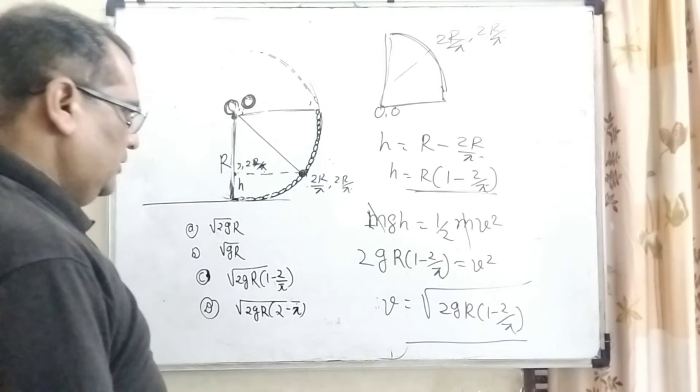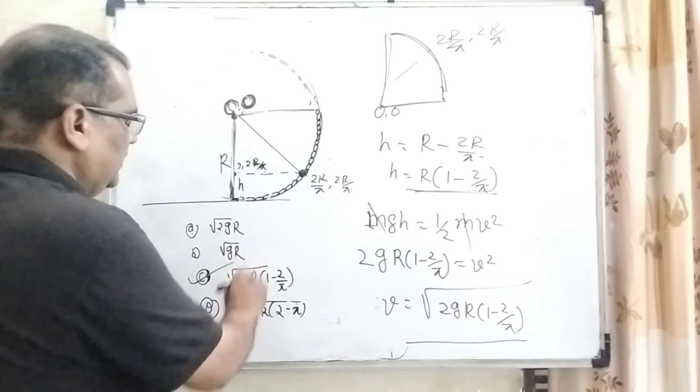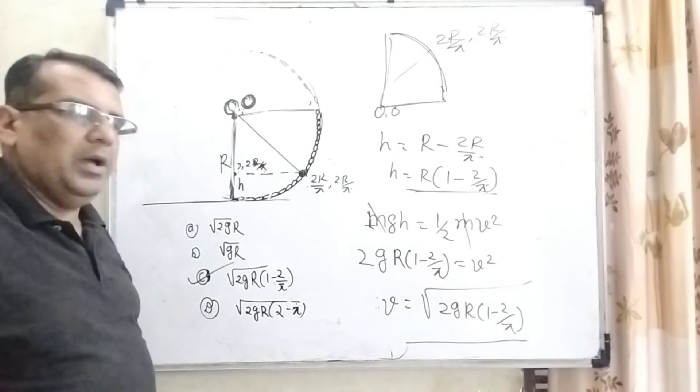Let's see which option is correct. Option C is correct: root 2gR into bracket (1 minus 2 by pi).